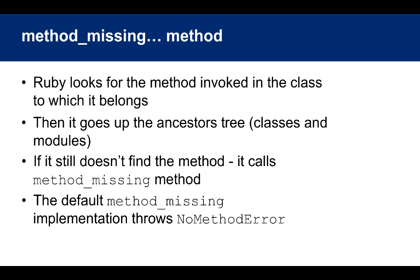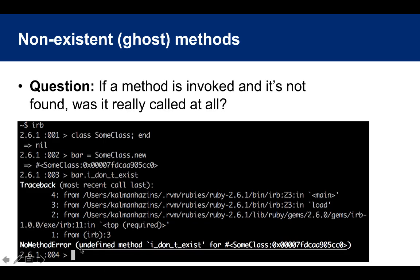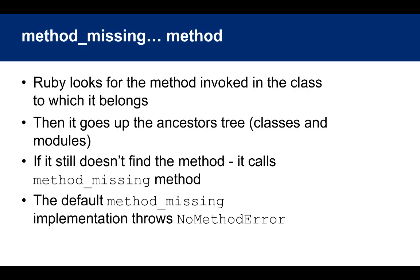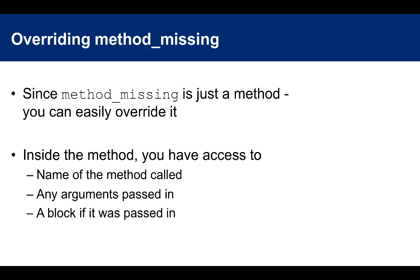Actually it's not so obvious what's happening behind the scenes. Ruby looks for the invoked method in the class to which it belongs, and obviously doesn't find it there. Then it goes up the ancestors tree — classes and modules — and still doesn't find it. If it still doesn't find the method, it invokes the method_missing method. The default method_missing implementation throws the NoMethodError, which is why you see that error. But method_missing is just a method, so you can easily override its behavior.